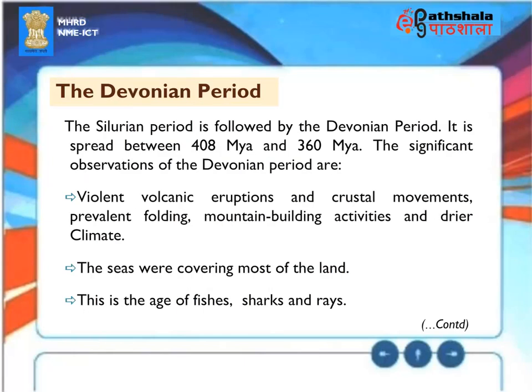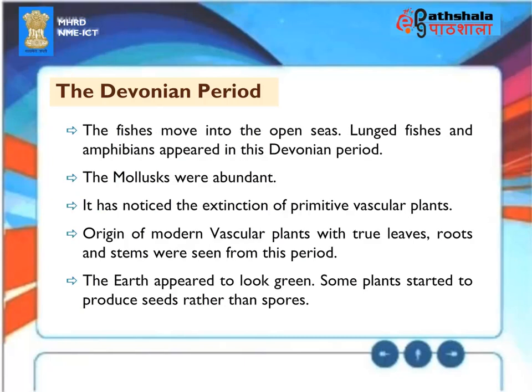The Devonian period (408 to 360 Mya) followed the Silurian. Significant observations include: violent volcanic eruptions and crustal movements, prevalent folding and mountain building activities, drier climate, and seas covering most of the land. This is the age of fishes — sharks and rays. Fishes moved into the open seas, and lunge fishes and amphibians appeared. Mollusks were abundant. The period saw extinction of primitive vascular plants and origin of modern vascular plants with true leaves, roots, and stems. The Earth appeared to look green, and some plants started to produce seeds rather than spores.